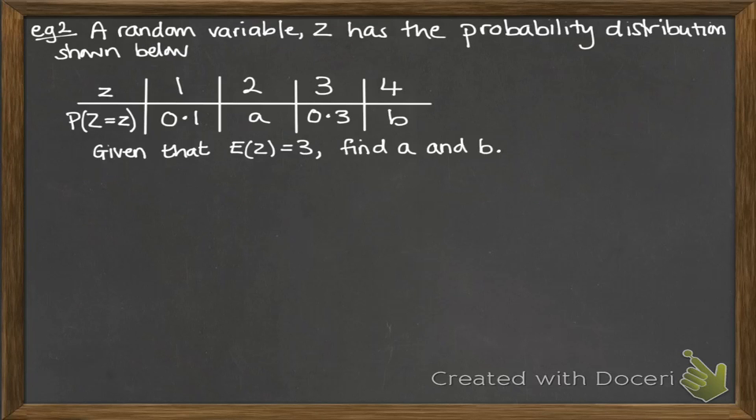Okay, second example. We've got a random variable z. It has the probability distribution shown in the table below. We've got some missing values there, so the probability that z is 2 is a, and the probability that z is 4 is b. We're also told that the expectation of z is 3, and we're going to find out what a and b are. So, first of all, we know that those probabilities have to add up to 1. So we have our first equation here. We can simplify that to a plus b equals 0.6. Second, we're told about the expectation.